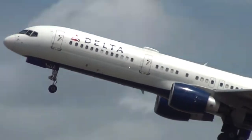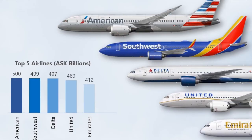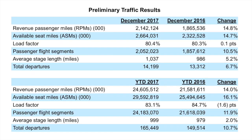ASKs can also be used to compare one airline against another. This can be done by region, by route, by type of airline, and at different time intervals. Here we see that American ranks first in total ASKs versus other major carriers. ASKs can also be analyzed at the system level — here we see the total ASMs for 2016 and 2017 for all US airlines at an aggregate level.